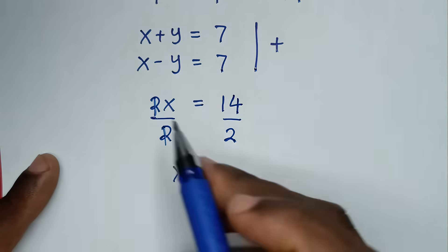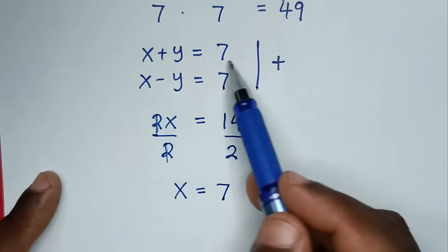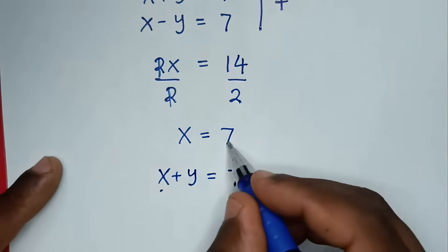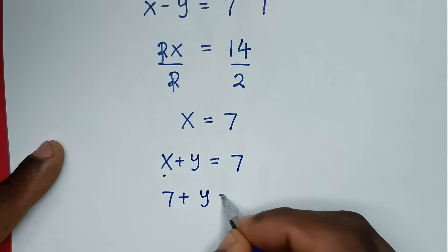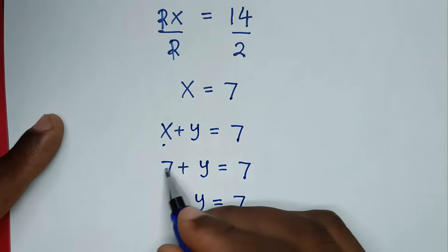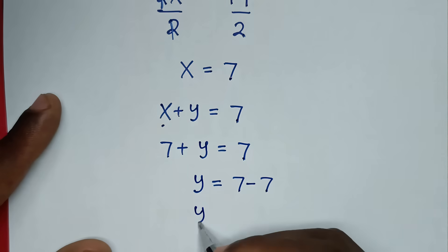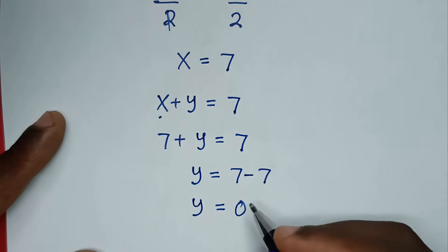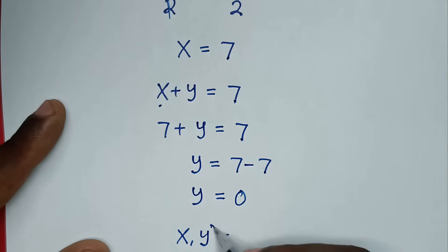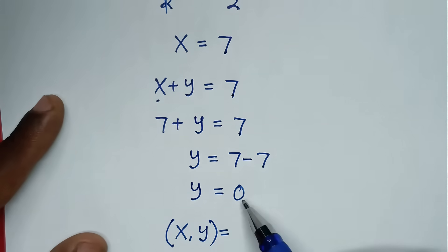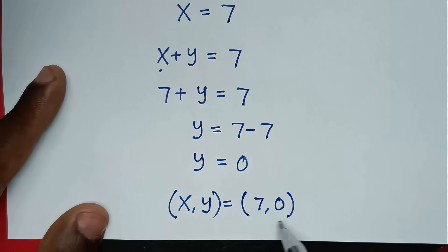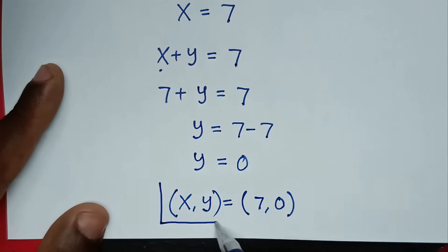To get y, we use the first equation x + y = 7. Substituting x = 7, we get 7 + y = 7. Taking 7 to the other side gives y = 7 - 7 = 0. So from case 1, the solution is (x, y) = (7, 0). Since x and y are both greater than or equal to 0, this solution is correct.